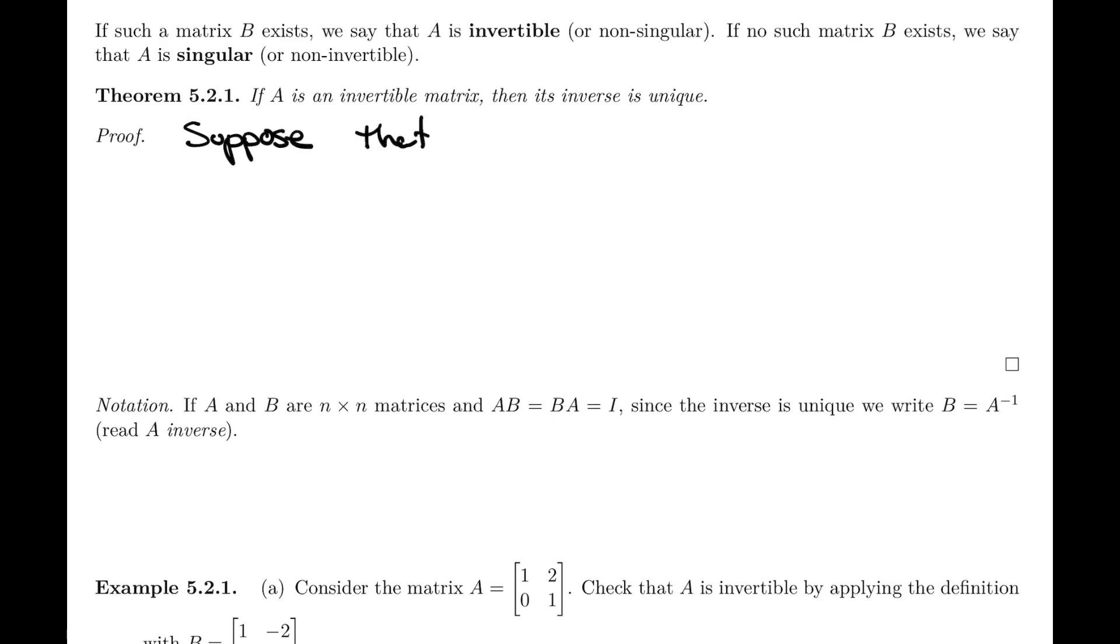So if A is invertible, then the inverse matrix is unique. Let's suppose that that is not the case. Suppose that B and C are n by n matrices, such that AB equals BA equals I, and the same thing for C. So AC equals CA equals I. In other words, suppose that there are two such matrices that satisfy this condition.